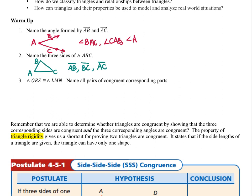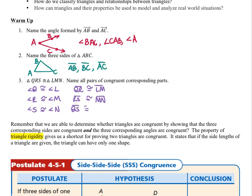Question 3 asks us to name all the pairs of congruent corresponding parts for congruent triangles QRS and LMN. So we know that angle Q is congruent to angle L — remember, order matters. Angle R is congruent to angle M, and angle S is congruent to angle N. For the sides: segment QR is congruent to segment LM, segment RS is congruent to segment MN, and segment QS is congruent to segment LN.